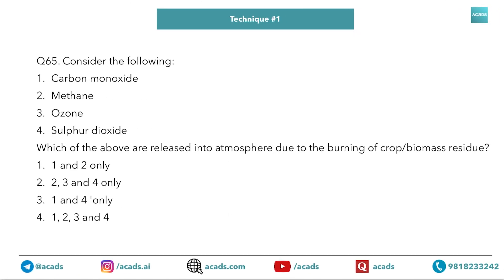There is nothing to discuss here. I think this is from a 2019 question. As mentioned earlier, a lot of candidates focused on whether it is a primary or secondary pollutant, and then overthought it and got it wrong. In your case, you just have to use technique no. 1 and mark all — one, two, three, four.